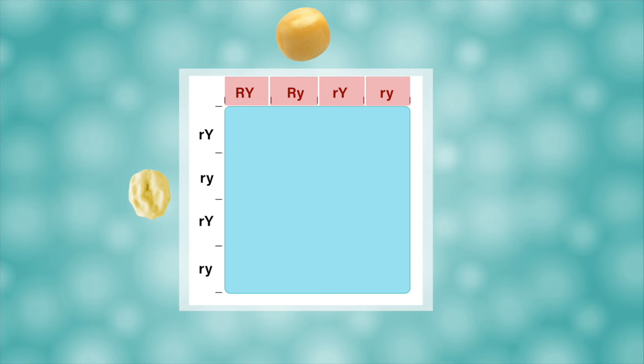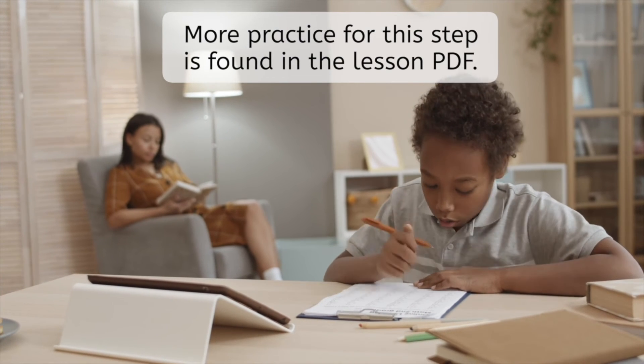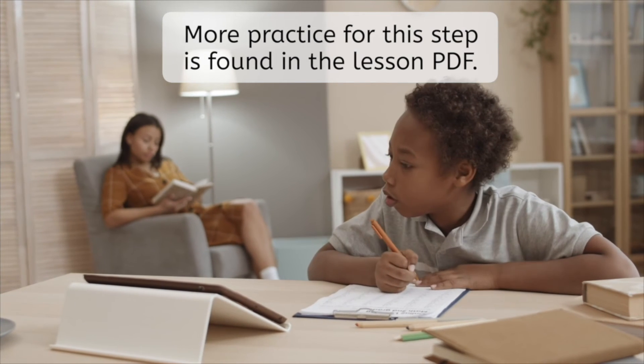Our wrinkled yellow parent could have produced little r, big y, little r, little y, and another little r, big y, and little r, little y. Even though the last two combinations are duplicates, it's important to list them on the table to get the right results. If following this step was challenging, there's more practice and examples in the lesson PDF, so be sure to check it out.